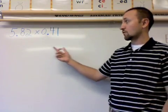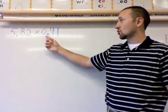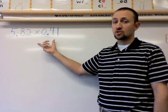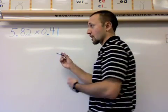So let's take a look at our first problem here. We've got 5.82 and I'm going to multiply that by 0.41. Now the first thing I want to do, just like we did with addition, is put one number on top of the other so I can start working this out. So I'm going to rewrite it now.